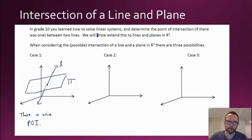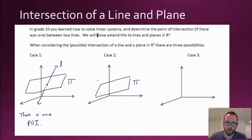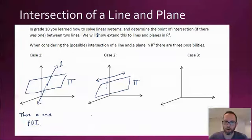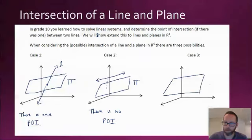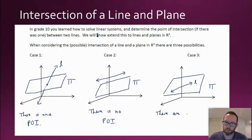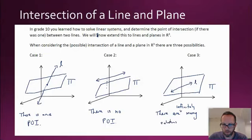I think most people can have an easy time visualizing that. Case two: what could happen is that the plane and line are parallel and there's some distance between them. In this case, there is no point of intersection. The third case is when you have a plane and the line is actually contained within the plane. In this case, there are infinitely many solutions, or points of intersection.